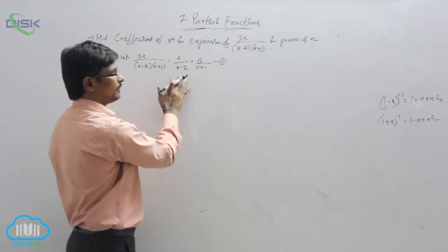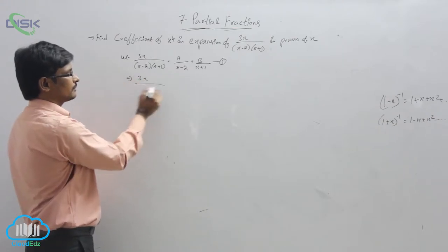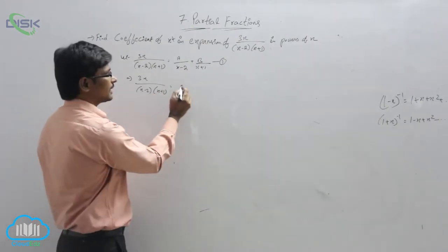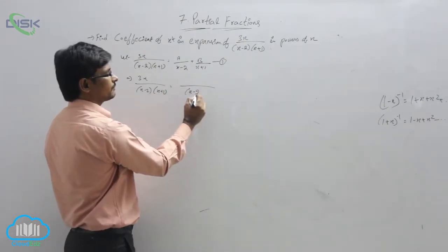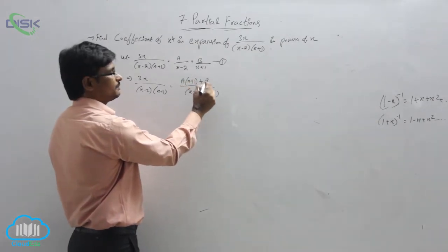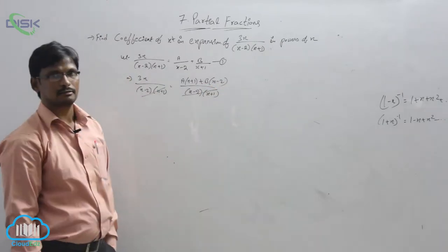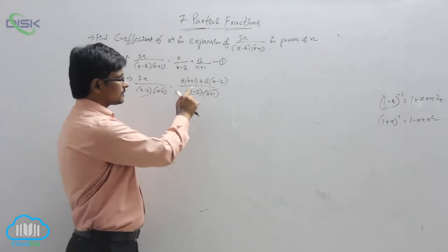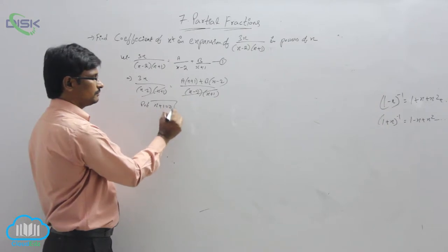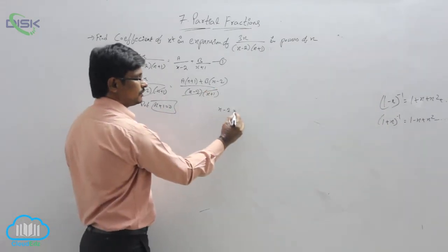Take this as equation number 1 and find out the values of A and B. For the RHS, take LCM: A(x plus 1) plus B(x minus 2). Clearly the denominator terms will be cancelled. Now to find the values, substitute the first term equal to 0 — put x plus 1 equal to 0 — and also substitute x minus 2 equal to 0.